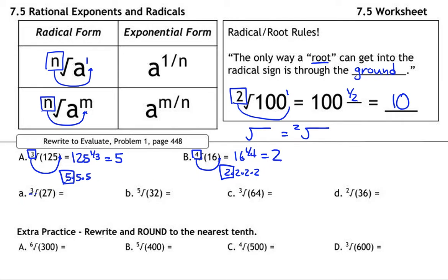All right, so rapid fire the rest of these. This 3 sneaks in. This becomes 27 to the 1 third, which turns into a 3. This 5 sneaks in through the bottom, so this becomes 32 to the 1 fifth, and that turns into a 2. This 3 sneaks in through the bottom. You kind of get the idea by now. So it turns into 64 to the 1 third. That turns into a 4. And here you go.